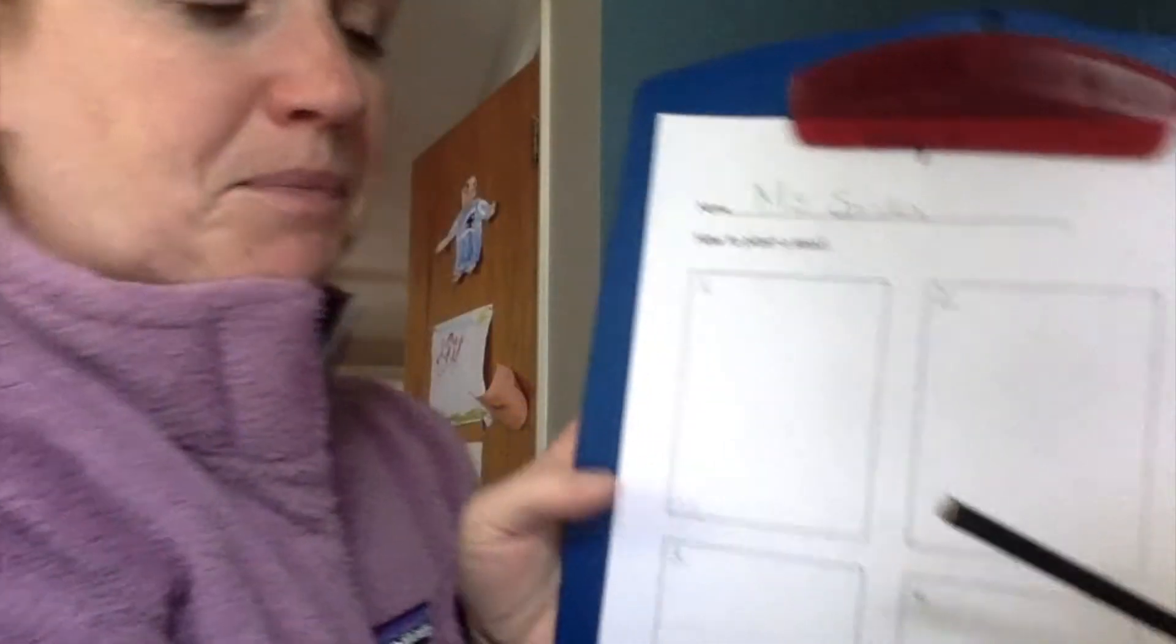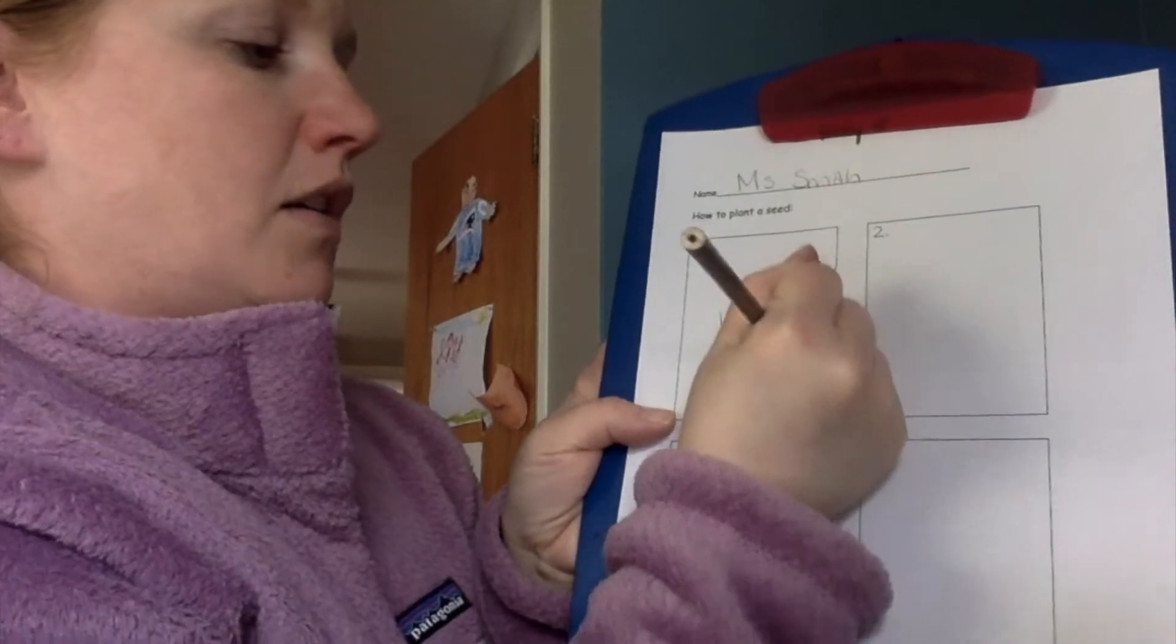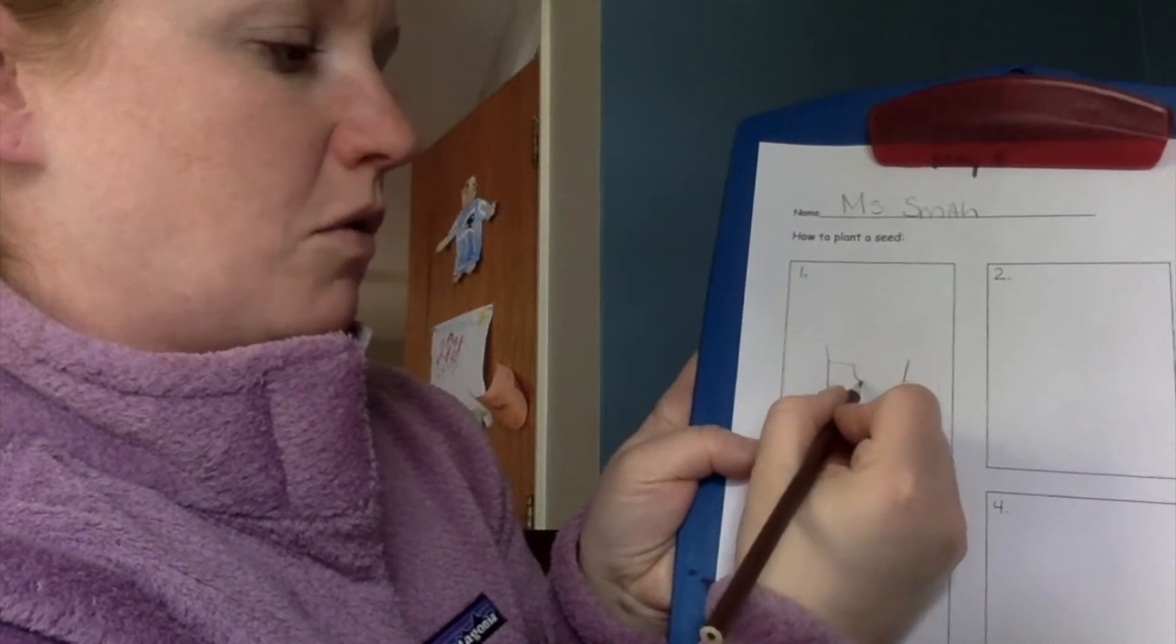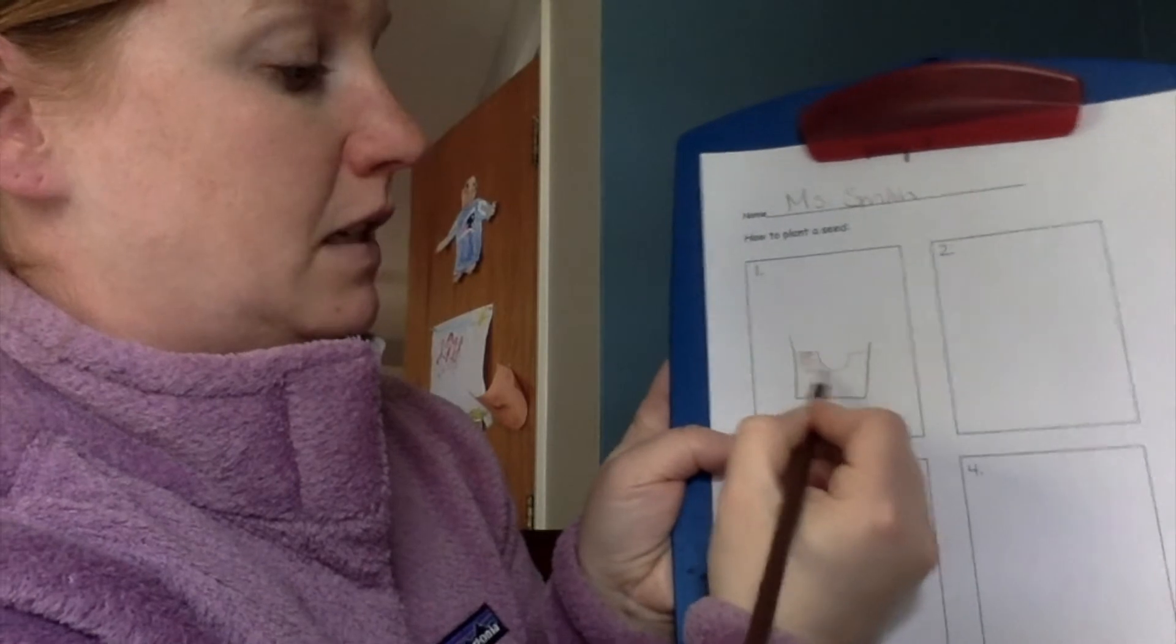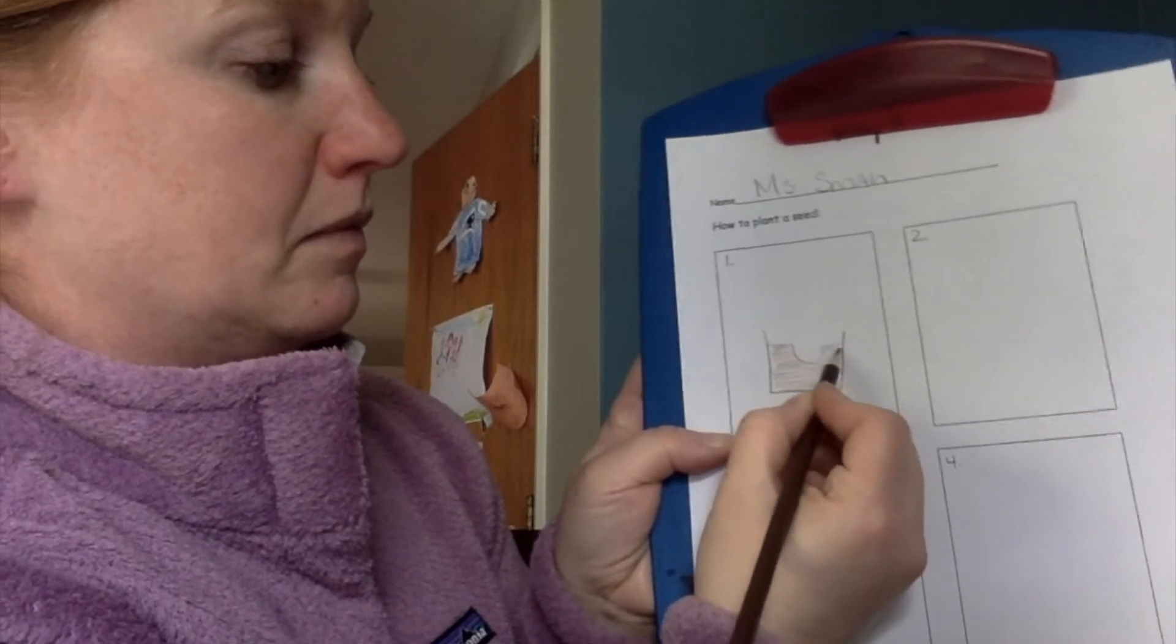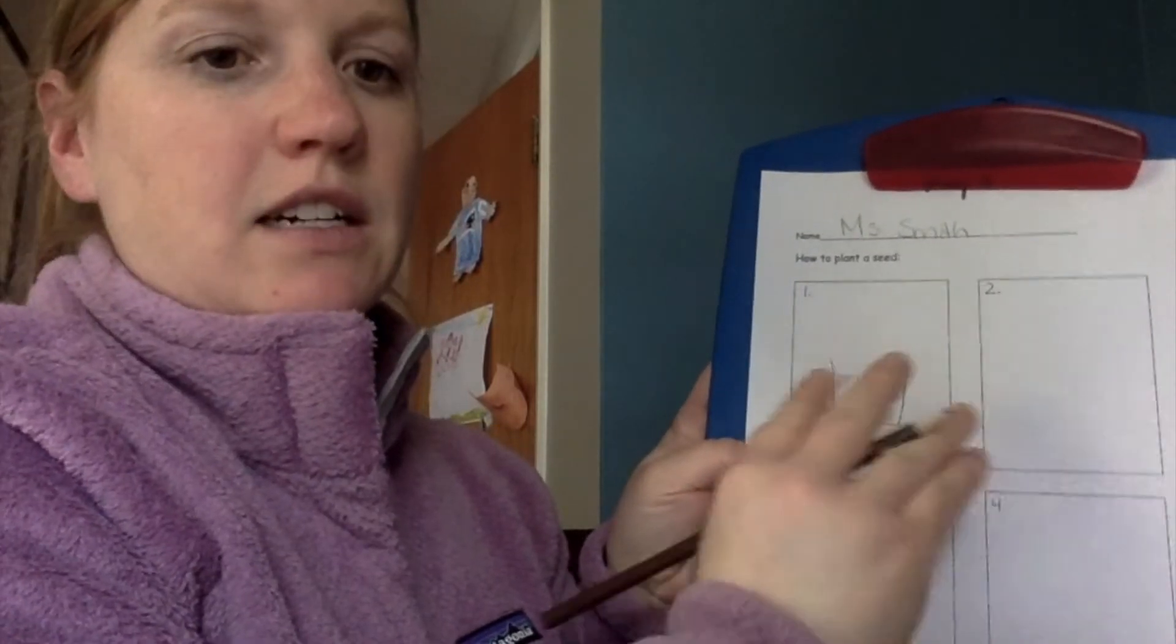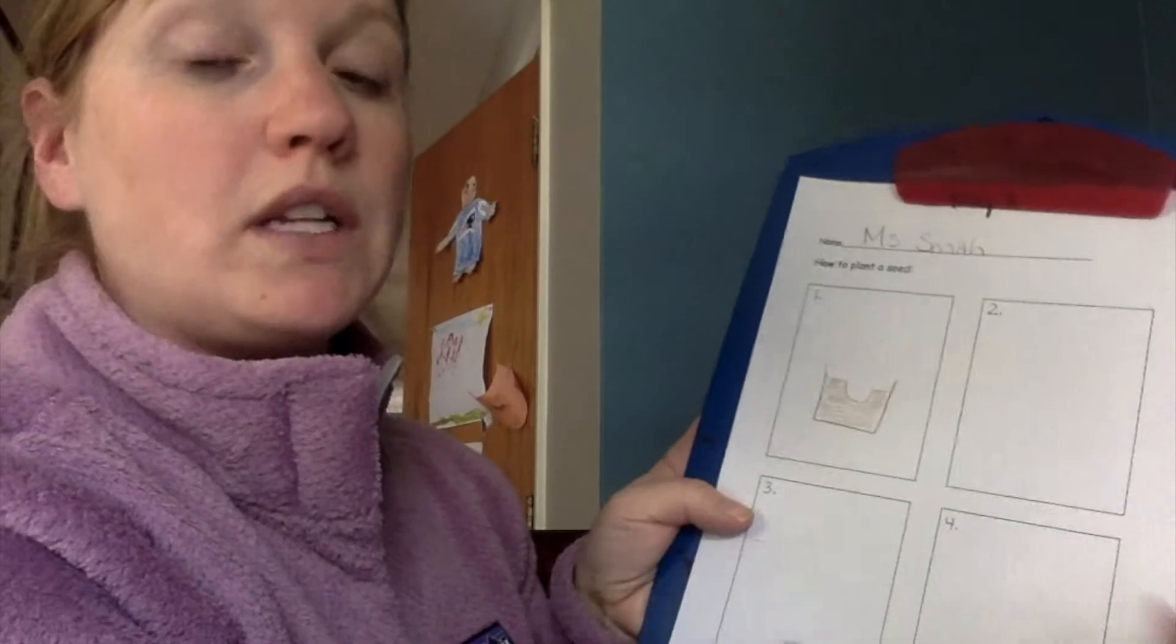So the first thing we did was to make a hole in the dirt. So here's our cup or our pot with the dirt. I'm going to draw the dirt here and here's my hole. You poked a hole in the dirt to put the seed in. I'm going to color the dirt. So I'm going to write the words. There's not a space here specifically for writing words so you don't have to do it if you don't want to. But it's good practice to write the words. So I'm going to write make a hole. You're just going to sound it out.